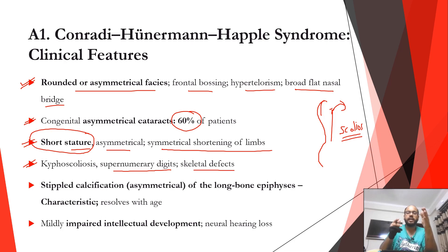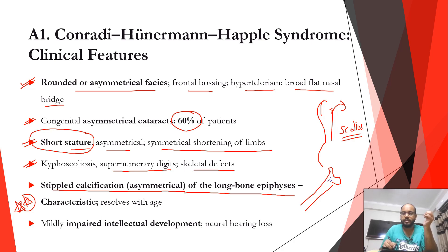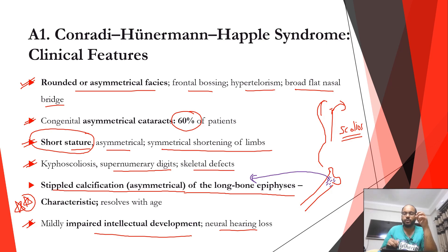Kyphoscoliosis and spinal abnormalities are features of CHH — spinal deformities with bending abnormalities. Supernumerary digits and other skeletal defects are also seen. Characteristically, stippled calcification or asymmetrical stippled calcification of long-bone epiphyses is seen on X-ray — a striped, stippled appearance at the epiphyseal plate rather than the normal smooth plate. There is also mildly impaired intellectual development with neural hearing loss. Key features to remember: round asymmetrical face, short stature, spinal and skeletal defects, and mild intellectual impairment.